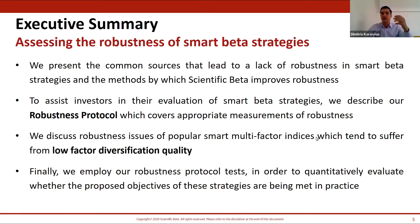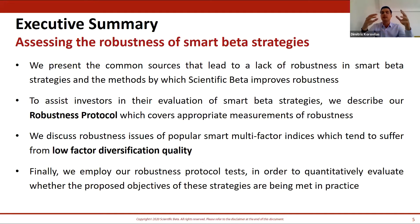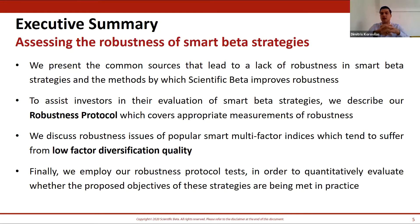On the qualitative side, we will present common sources that can lead to a lack of robustness, and explain the methods that Scientific Beta is using to improve robustness. On the quantitative side, we will present our robustness protocol covering appropriate measurements and metrics. Throughout the presentation we will make the point that there is a set of multi-factor strategies that tend to suffer from low factor diversification and exposure quality.